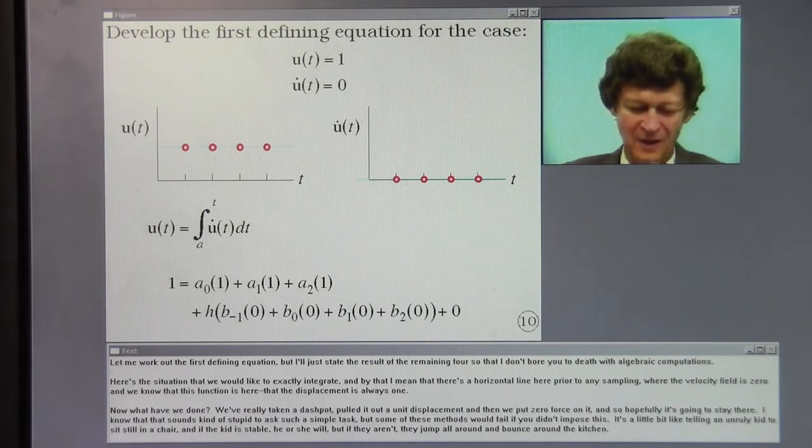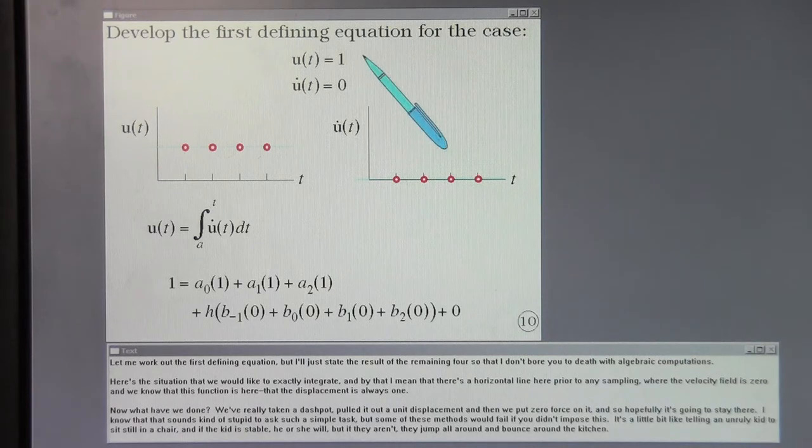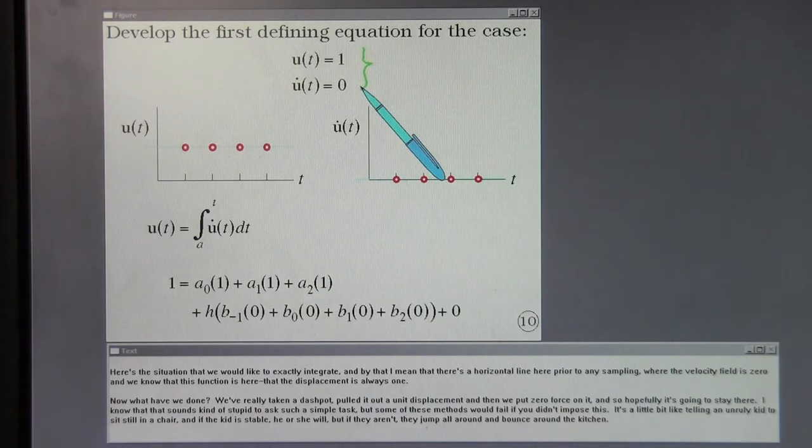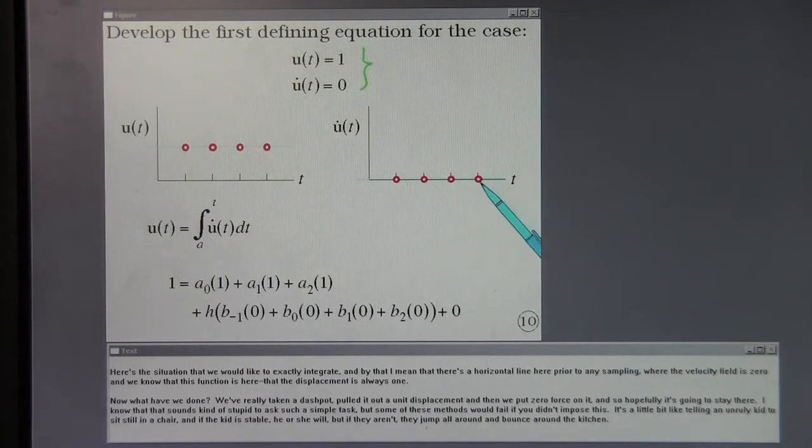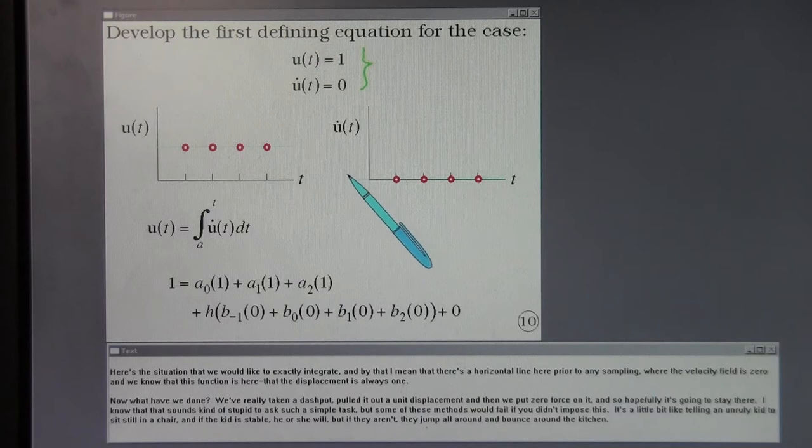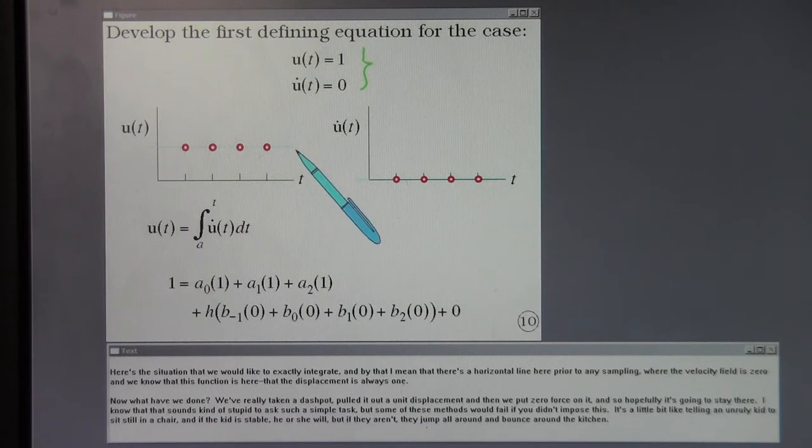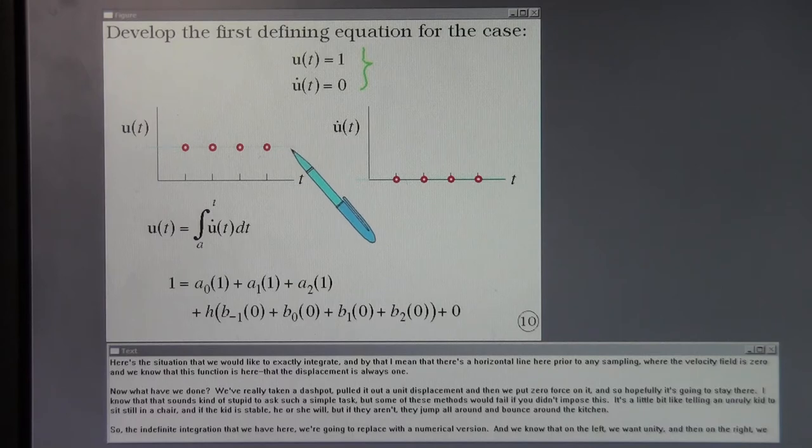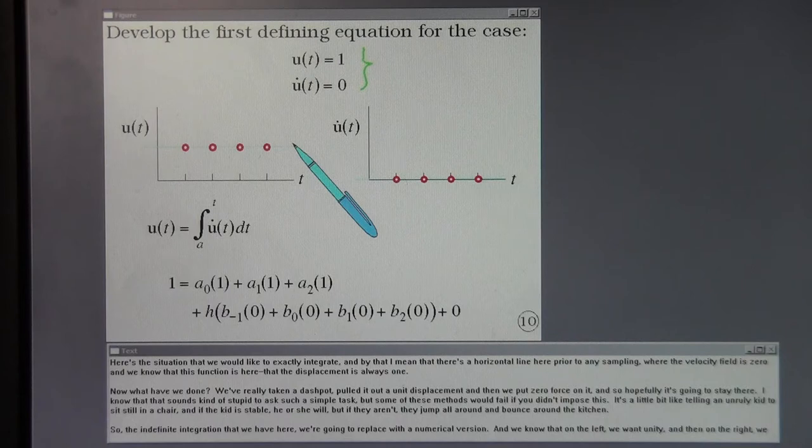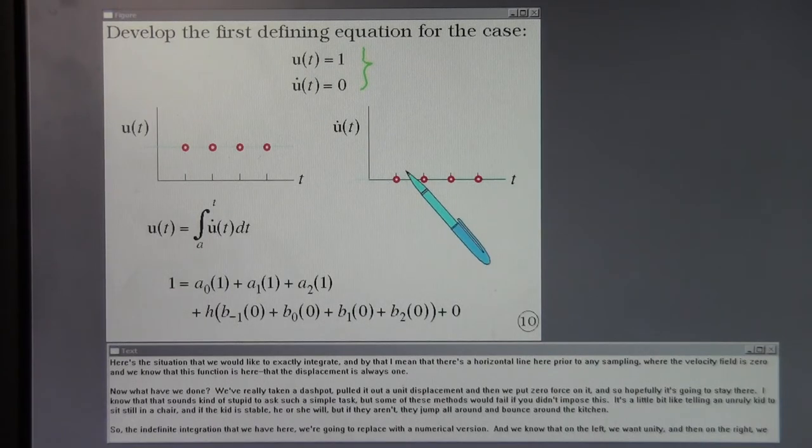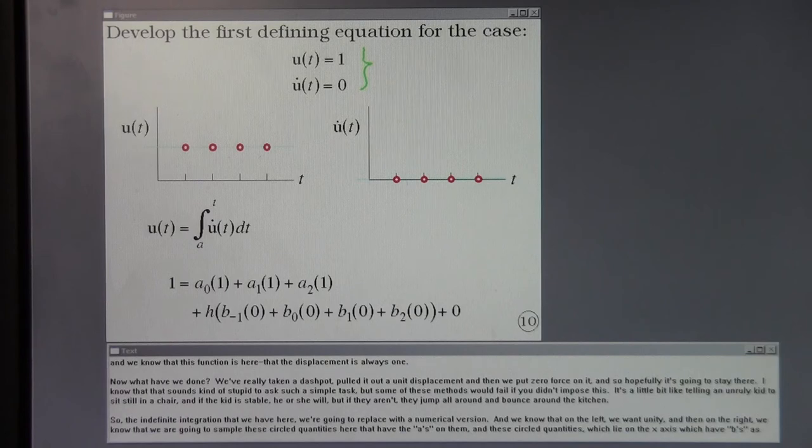Let me work out the first defining equation. Here's the situation we would like to exactly integrate and by that I mean that there's a horizontal line here prior to any sampling where the velocity field is zero and we know that this function is here that the displacement is always one. We really have taken a dashpot, pulled it out to one unit of displacement and then we put zero force on it. And so hopefully it's going to stay there. Some of these methods would fail if you didn't impose this.